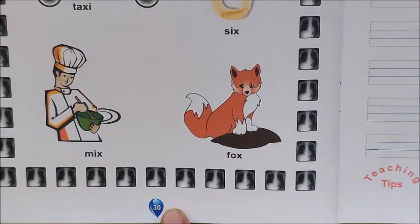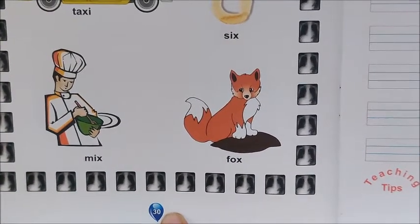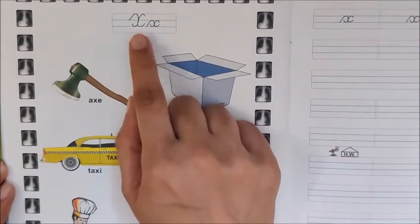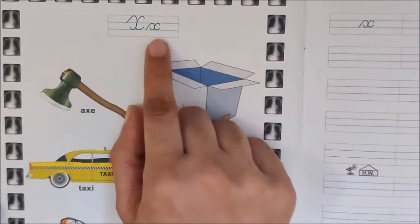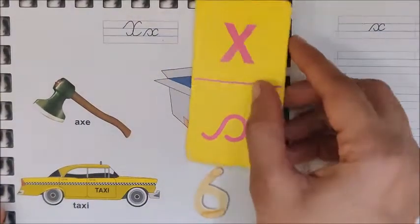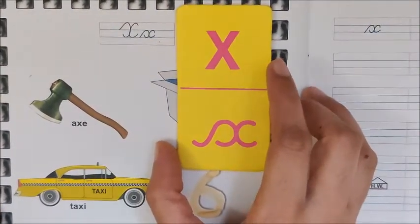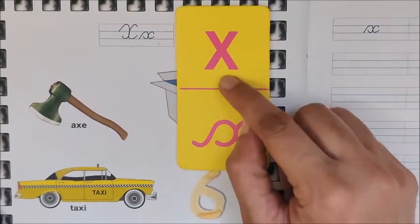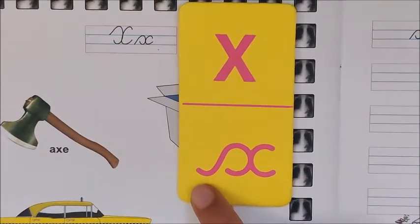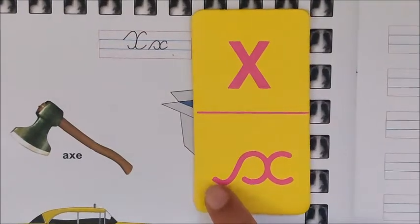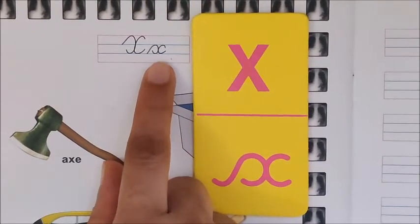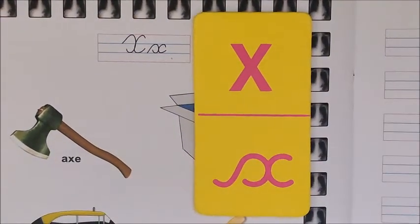I have opened page number 30. Now let us see what letter we have on this page. We have letter X. This is capital cursive X and this is X in lowercase cursive. I have taken out this card from the alphabet kit. This is X in print and this is X in lowercase cursive. But children, we will not write X like this. Look at the hand of X — we will write X like this in lowercase cursive.